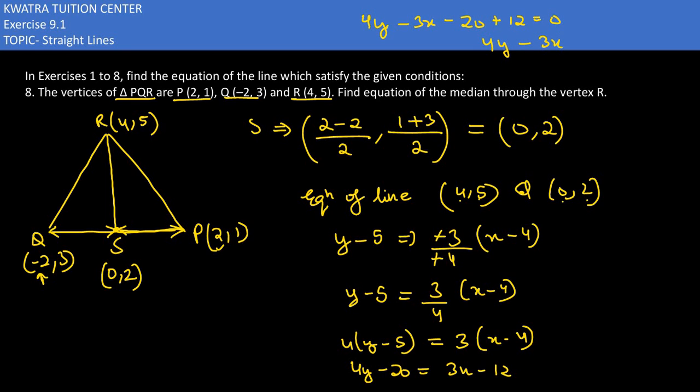So what is your final value? 4Y minus 3X minus 8 equals 0. That would be your equation of the line.